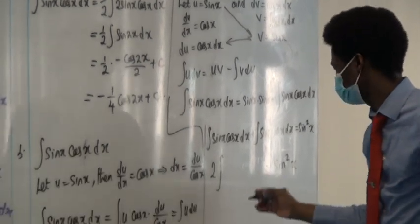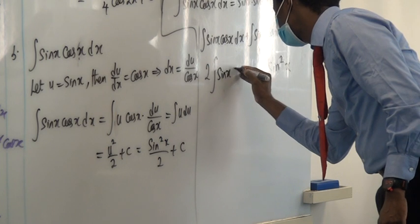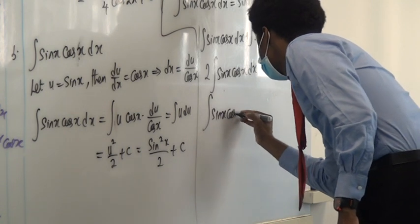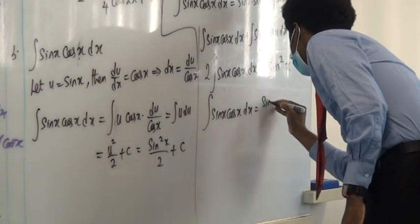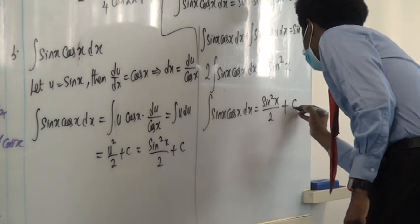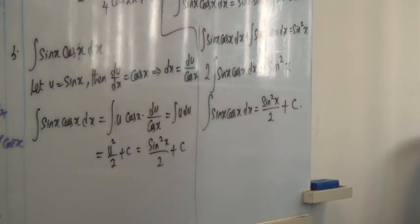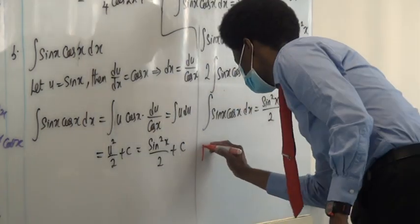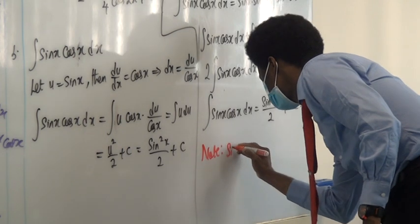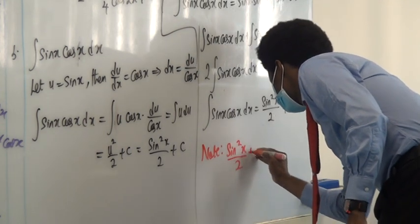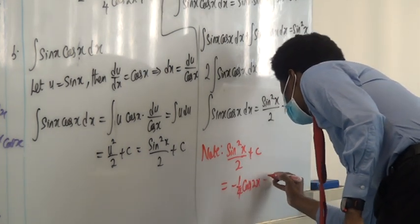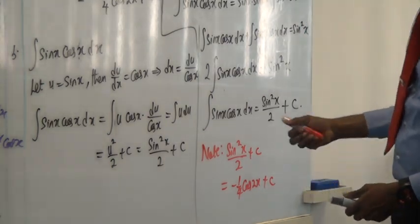So they are the same results — that's how you complete it. The surprise test will no longer be a surprise: you have it on Thursday, just for 20 minutes, then we do definite integrals. To confirm: sin²(x)/2 + C is the same as −(1/4)cos(2x) + C.